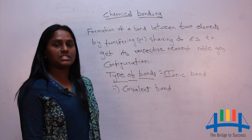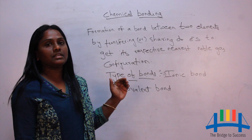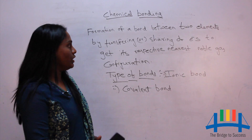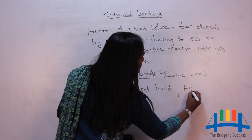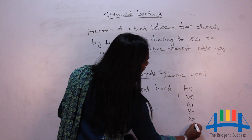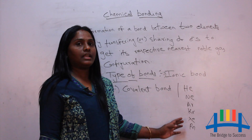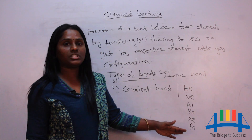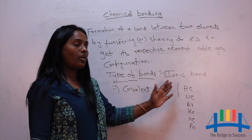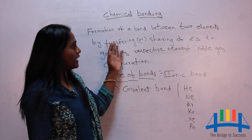Noble gases are stable by carrying a completely filled shell with complete octet electrons. Octet means eight electrons. Noble gases include helium, neon, argon, krypton, xenon, and radon. They carry eight electrons in their outermost shell, called octet electrons or octet configuration, following the 2n² formula.